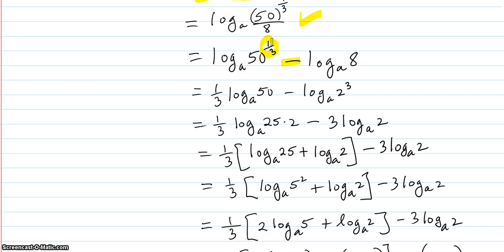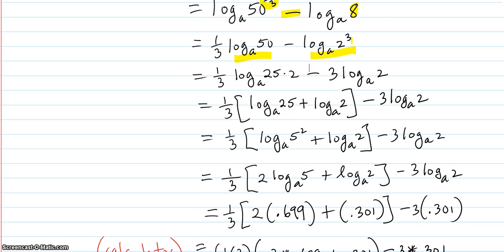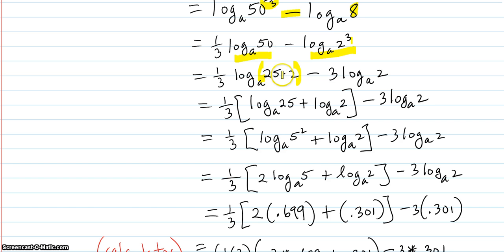Now we're going to use the power rule to bring the one-third to the front. We also write 8 at the same time as 2 to the third. Then we break up 50 as a product of 25 and 2, because we see 5 squared inside 50, and log base A of 5 is one of the given values, so that's a good move.